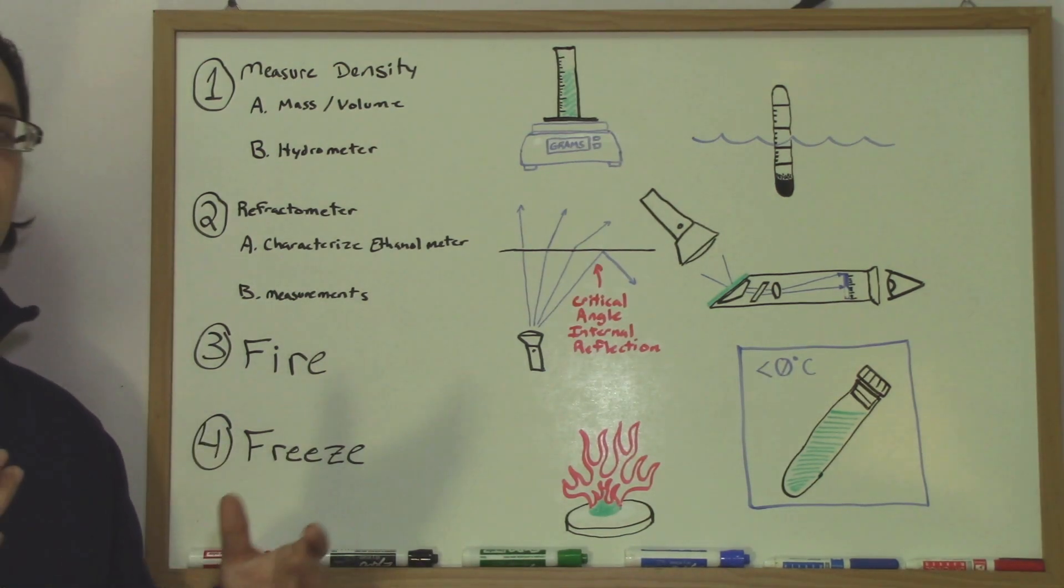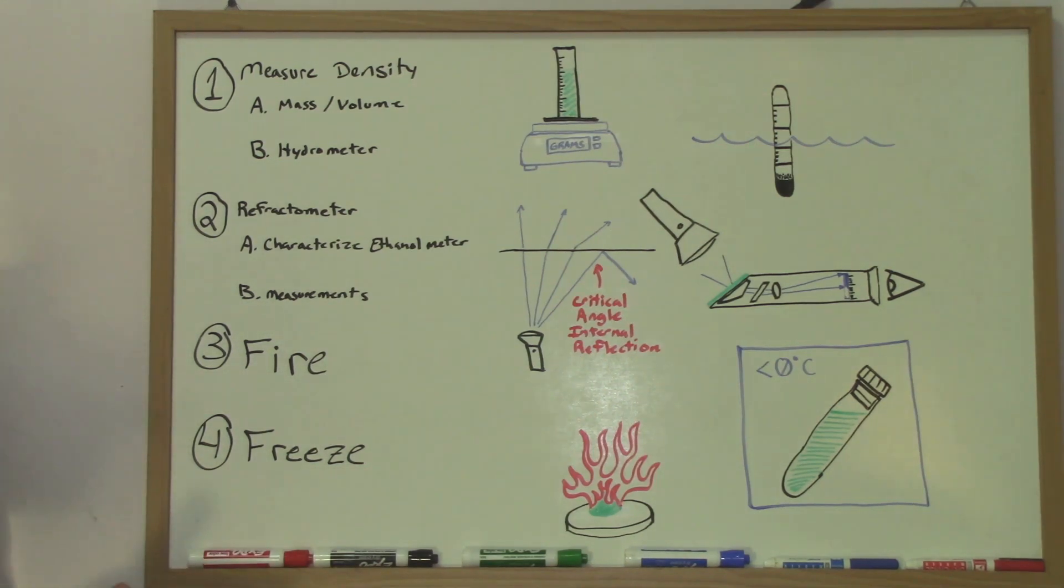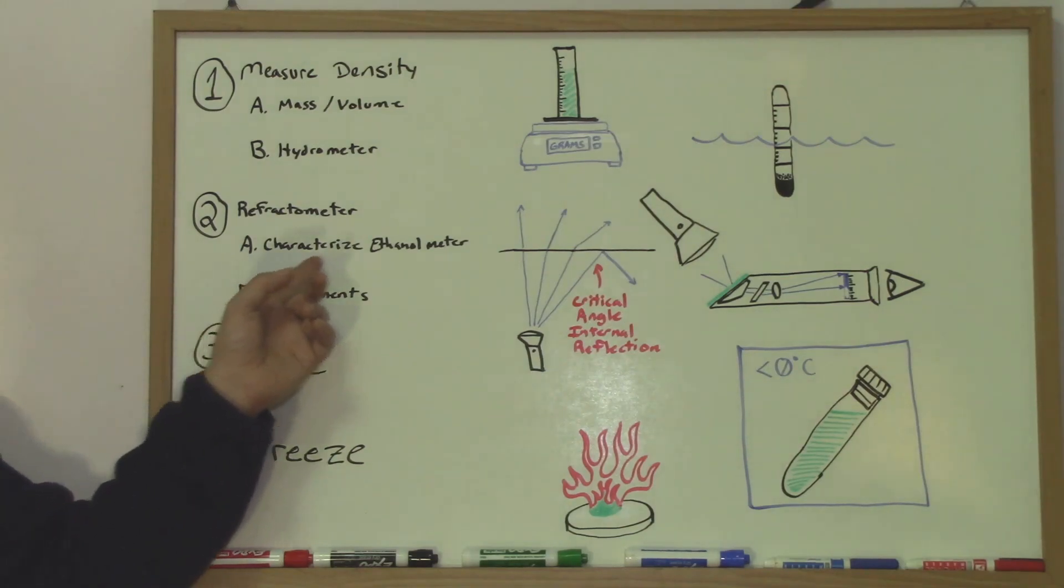If you drink it, it creates toxins or formaldehyde and all this bad stuff you don't want to drink. That's denatured alcohol. They add methanol to denature it so that people don't drink it.